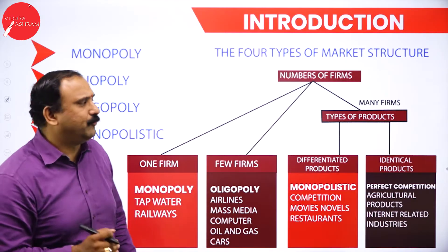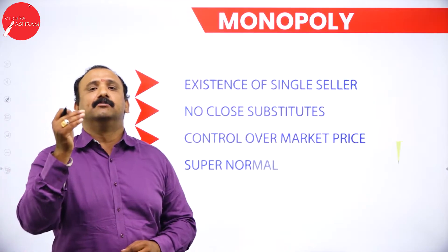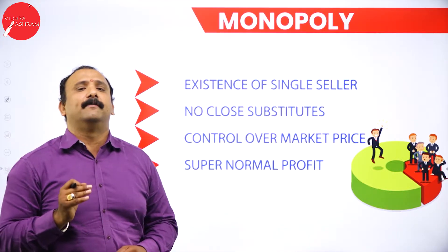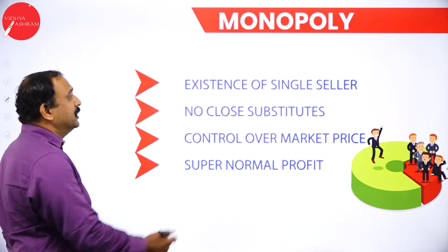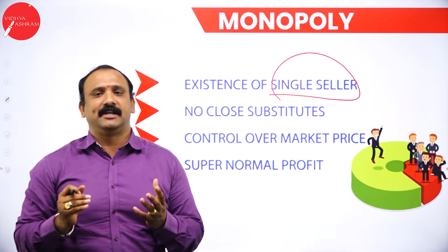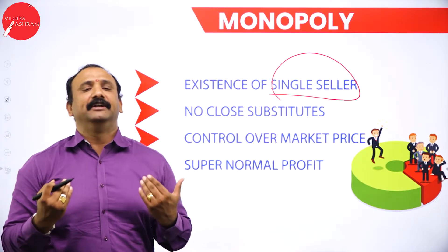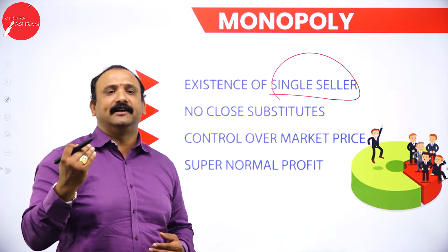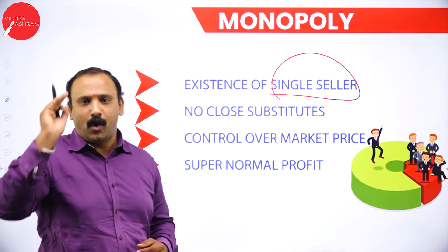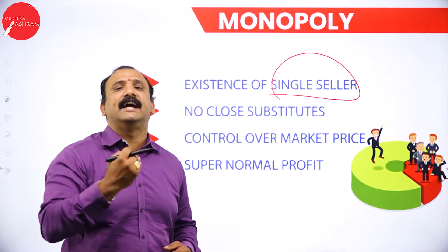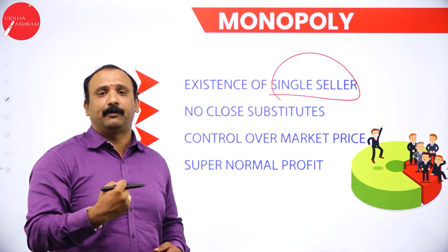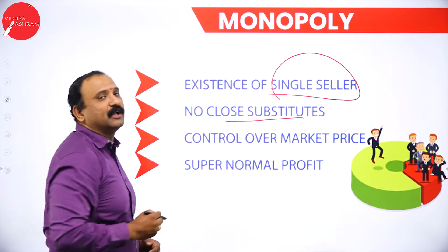Now let's look in detail at monopoly. The key features are: existence of a single seller, no substitutes available, complete control over market price, and super normal profit. When there is a single seller, there is nobody to challenge you — you hold complete control over the product. You decide the price, and when people want to buy that product desperately, they must come to you. There are no close substitutes available.